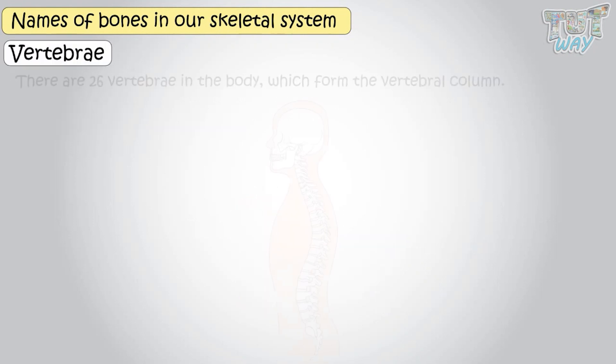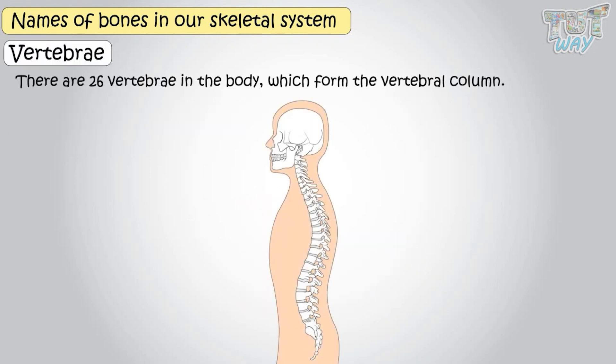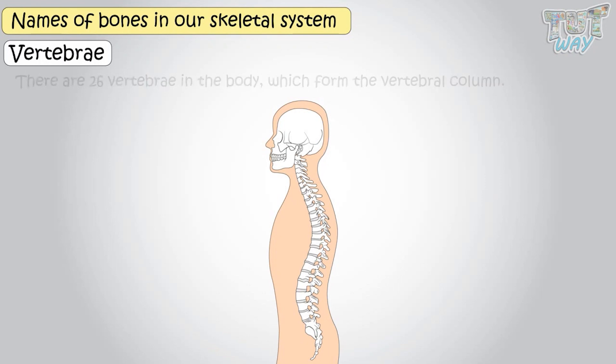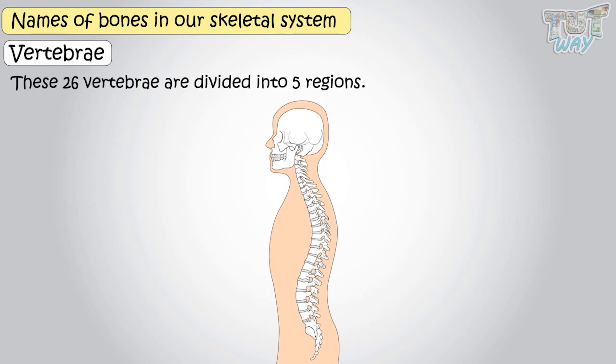There are 26 vertebrae that form the vertebral column of the human body. These 26 vertebrae are divided into five regions.